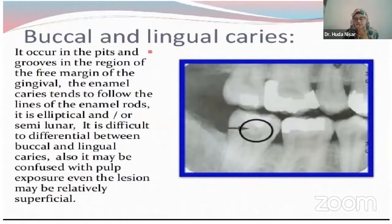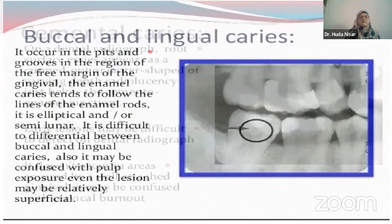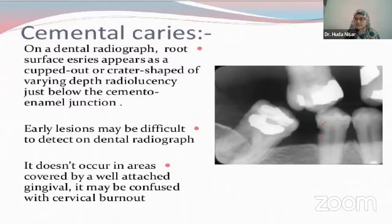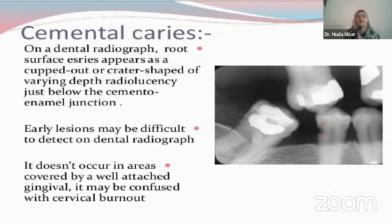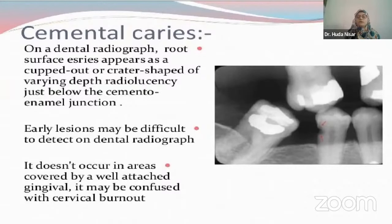Then we have buccal and lingual caries — they are very much visible and could be differentiated clinically. But on radiograph you could also observe the lesion only if it is a very deep lesion, and there will be a radiolucent spot on the DEJ. Now we have cemental caries. Peripheral burnout could be misinterpreted as cemental caries. Cementum has a very low calcium and very high fluoride content, which makes it resilient. If you have cemental caries, there is a likelihood that the patient is also suffering from periodontal disease. It does not occur in areas covered by a well-attached enzyme. You have to differentiate it because cemental caries will not be uniformly observed, whereas peripheral burnout will be uniformly observed in all teeth.